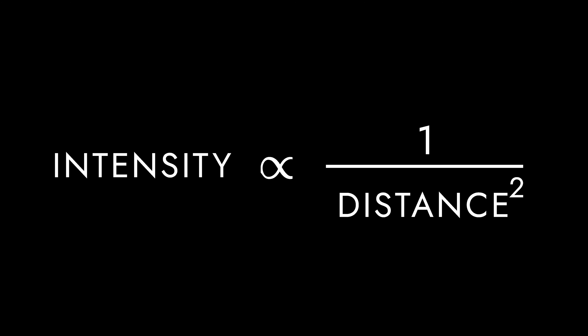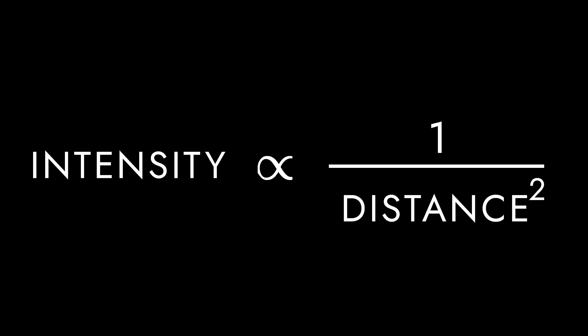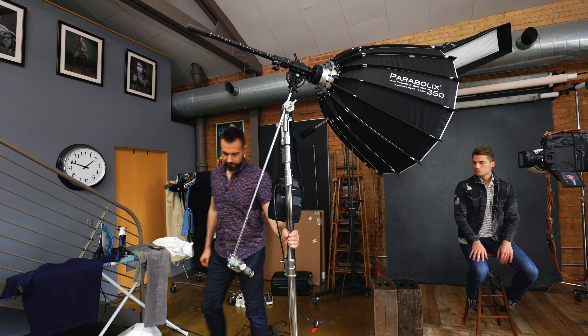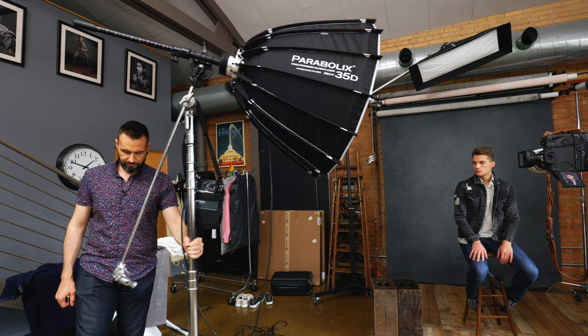Understanding the inverse square law can significantly improve your lighting techniques and overall image quality. The inverse square law states that the intensity of the light is inversely proportional to the square of the distance from the light source. Don't worry, it's really quite simple. As you move your light source further away from your subject, the light intensity decreases dramatically. For example, if you double the distance of your light from your subject, the light intensity doesn't just halve — it actually reduces to one quarter of its original intensity, which is two stops darker.